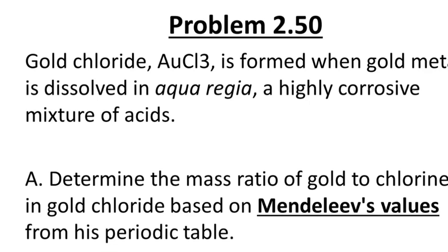Here's question 2.5 from your homework assignment. Part A asks you to calculate the mass ratio of gold to chlorine in the compound gold chloride using values from Mendeleev's table.